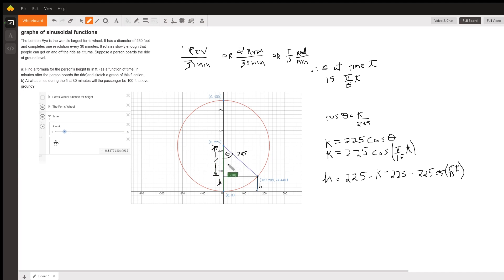So the cosine of theta would be k over 225. K equals 225 cosine of theta. But as we noted up here, theta at any time t has a measure of π/15t.